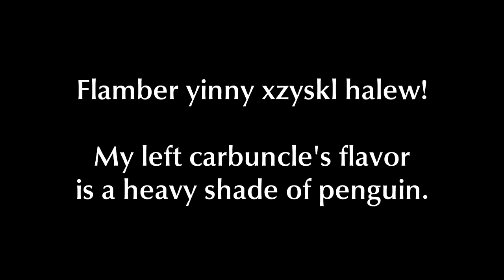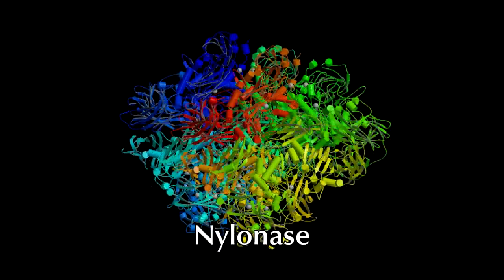So how does evolution increase information? Let's look at an example. Nylonase is an enzyme that allows a certain strain of flavobacteria to digest the byproducts of nylon manufacturing. It didn't always have it — it was created by a new gene that increased the complexity of its host and gave the organism new information. This bacteria, in less than a few decades, evolved the ability to digest nylon byproducts, which didn't even exist before. This is the exact amino acid sequence of the original digestion gene. There was a gene duplication event that made a copy of this gene, which has no effect except that one copy could mutate freely. No new information was actually created at this point — according to Shannon theory, this is just redundancy, since it's a copy of a gene that exists elsewhere.